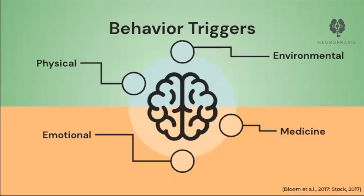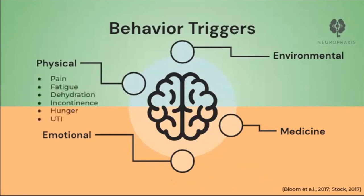Behavior can be triggered and influenced by outside occurrences as well. Looking at potential physical, emotional, environmental, or medicinal related influences can help you determine the roots of these behaviors. As we go through each category, take a mental note or physically write down any areas you think your loved one may have sensitivity to. Physical symptoms like pain or having a UTI can make your loved one feel easily irritated or confused. Some survivors may even be sensitive to sound, known as hyperacusis, or may find summer months more unbearable as their bodies have a harder time regulating heat.